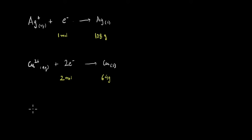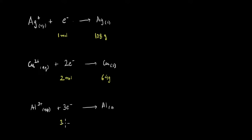Let's take one last example: aluminum. The aluminum ion gains 3 electrons and is deposited as aluminum at the electrode. In this case, 3 moles of electrons give 1 mole of aluminum deposited. Since the molar mass of aluminum is around 27 g/mol, for 3 moles of electrons we get 27 grams of aluminum deposited.